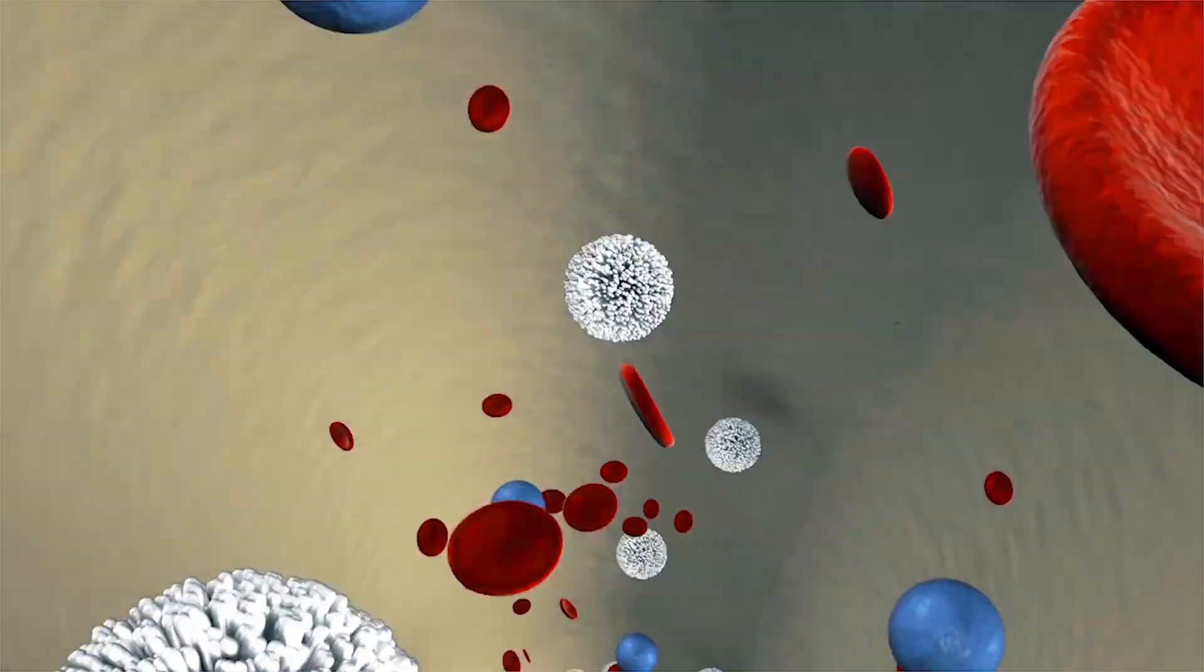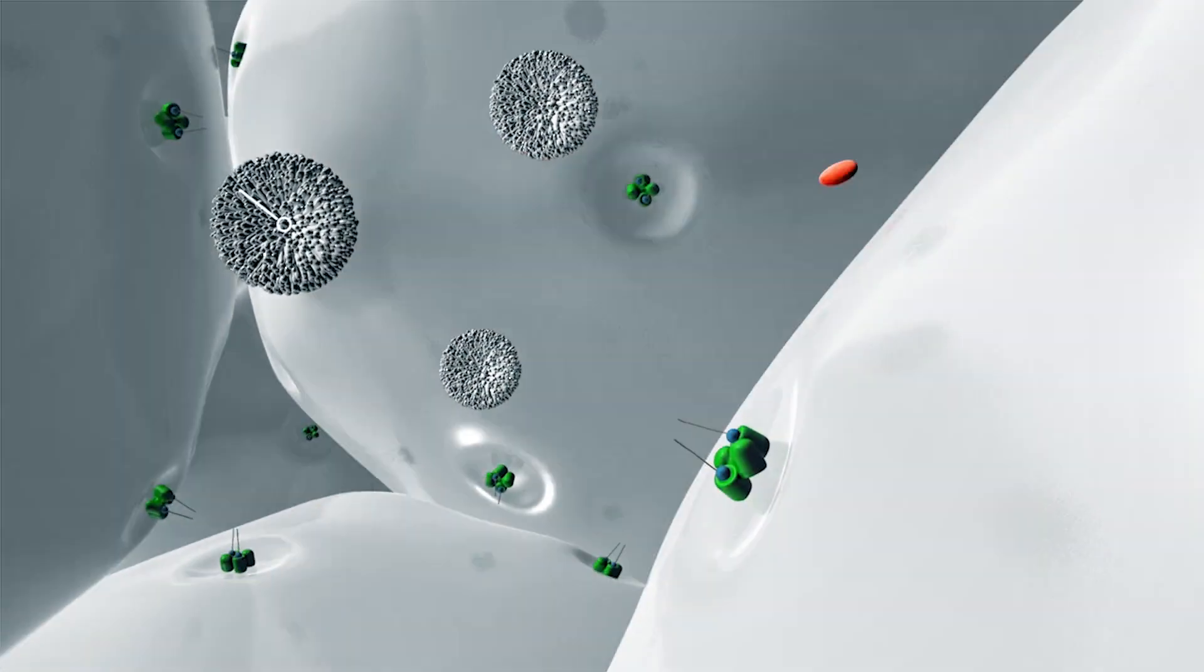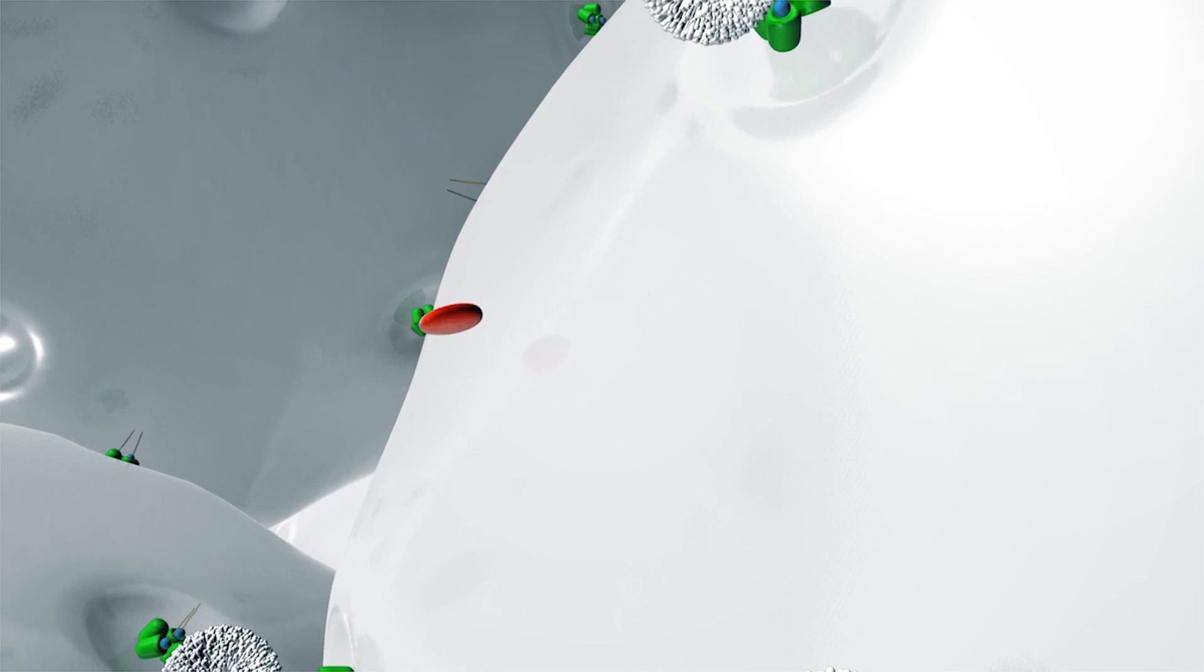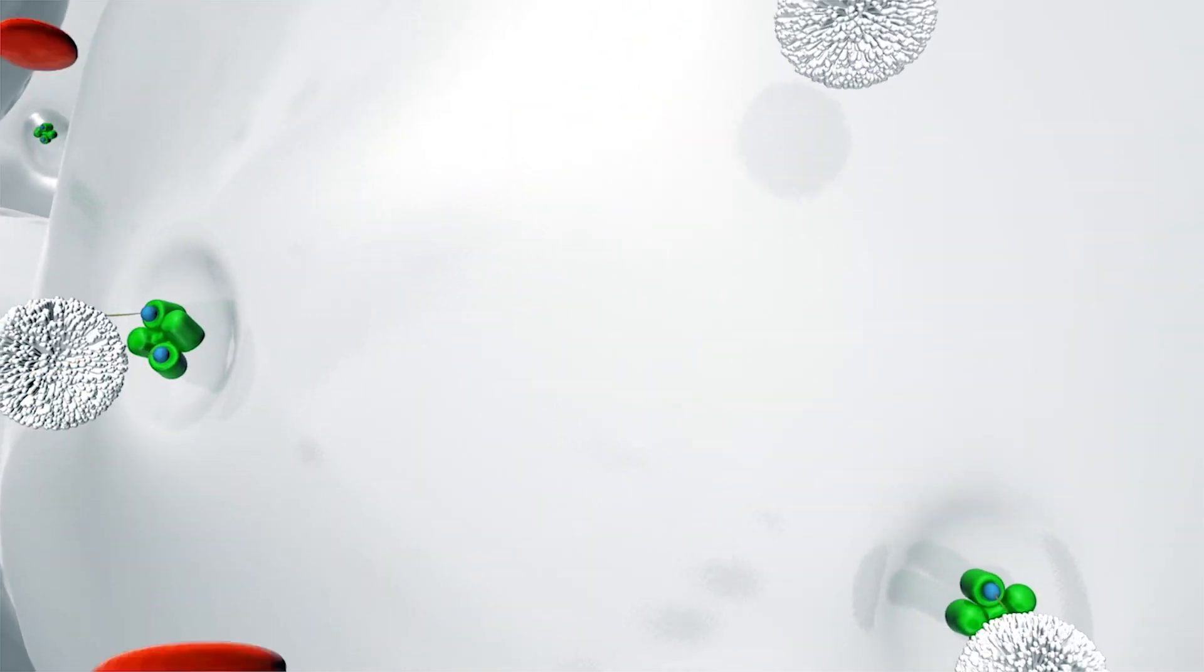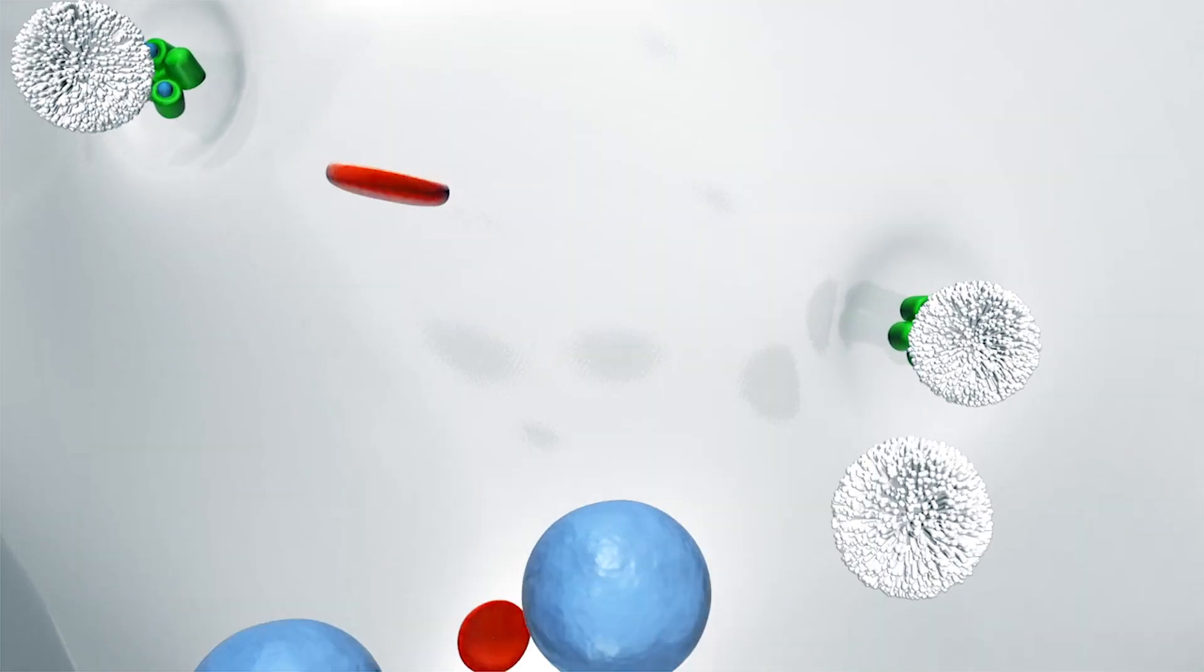As soon as the whole blood passes through the column, the target cells dock to the Fab fragments. Those cells that are unable to read the code do not adhere.